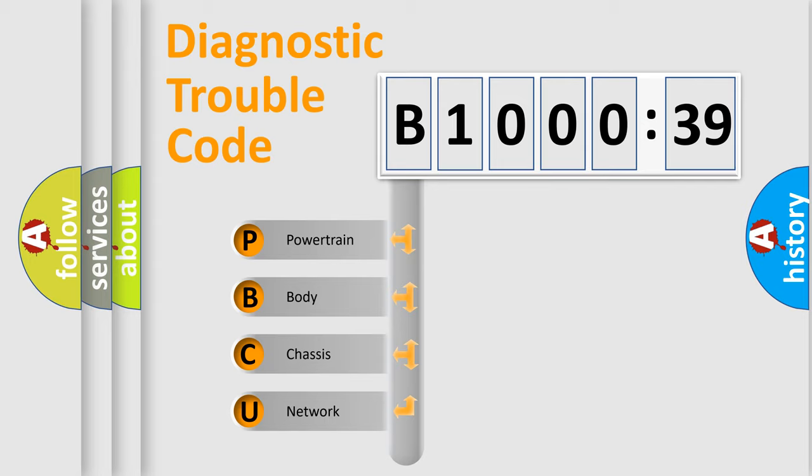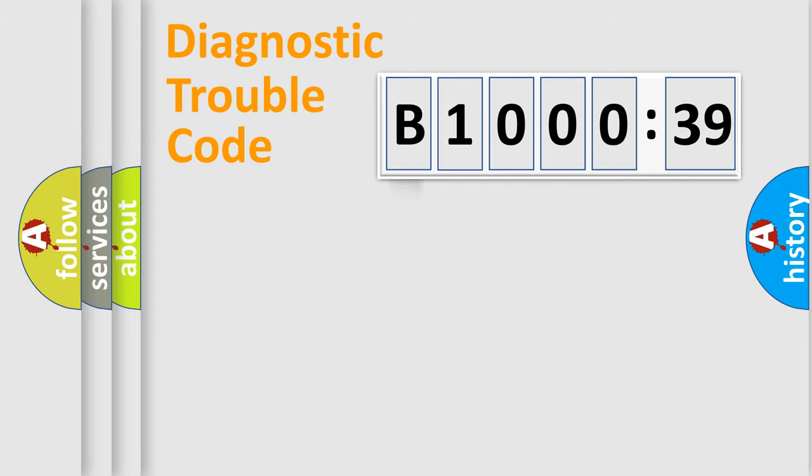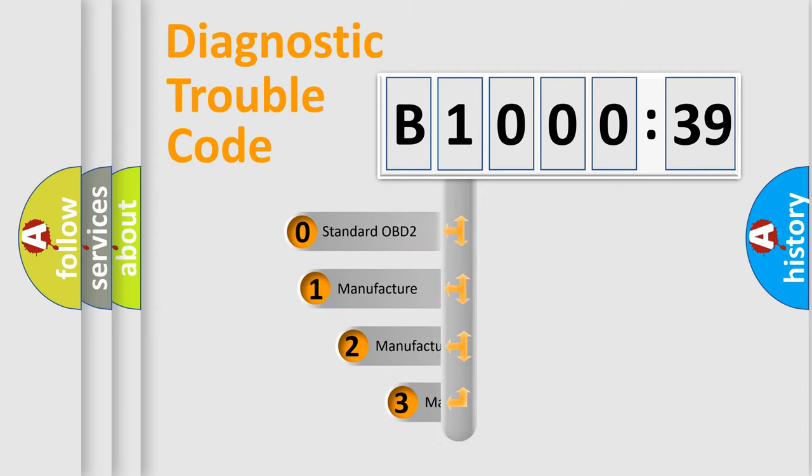We divide the electric system of automobile into four basic units: Powertrain, Body, Chassis, and Network. This distribution is defined in the first character code.